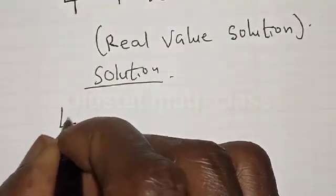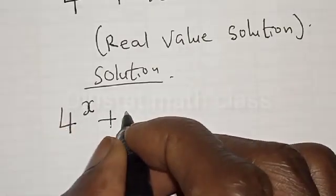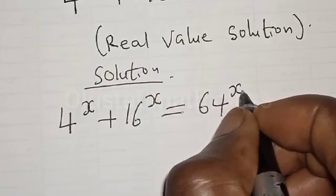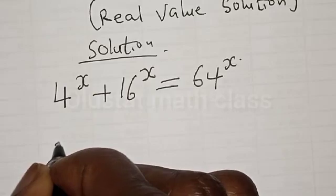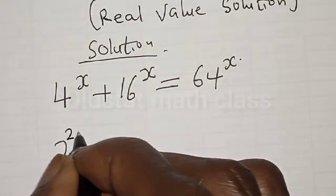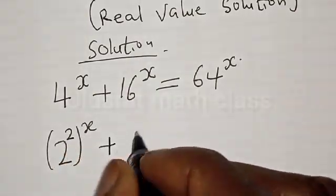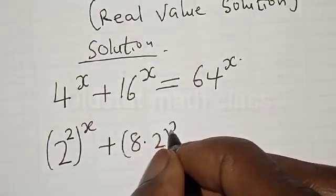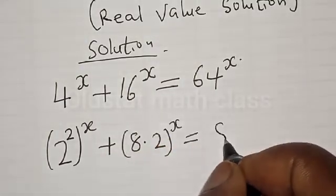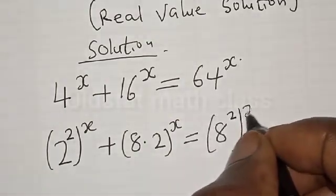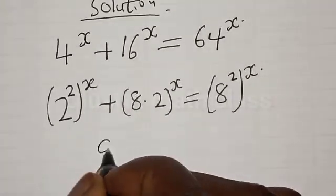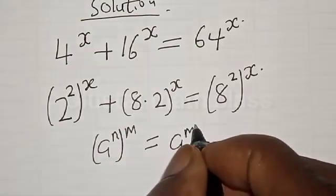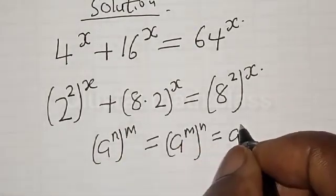We have the given equation: 4 raised to power s plus 16 raised to power s is equal to 64 raised to power s. Now 4 raised to power s can be expressed as 2 squared raised to power s, plus 16 — which is 8 multiplied by 2 — raised to power s, is equal to 64, which is 8 squared, raised to power s. Remember, if you have a raised to power n raised to power m, that is the same as a raised to power mn.